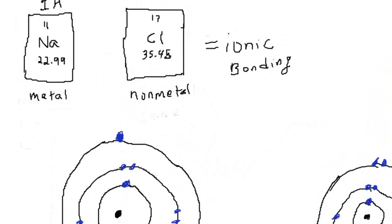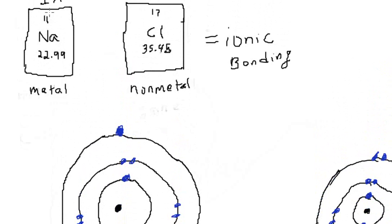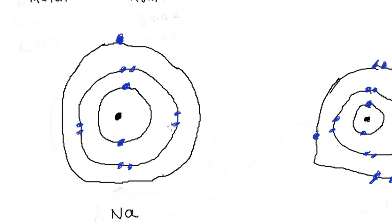Sodium has an atomic number of 11 — 11 is the number of protons. If you have 11 protons, you also need to have 11 electrons. The circular rings where I drew the electrons are called shells. The first shell can only have two electrons, and the second shell can only have a total of eight electrons. Sodium has a total of 11 electrons, so on the last shell I only drew one electron.